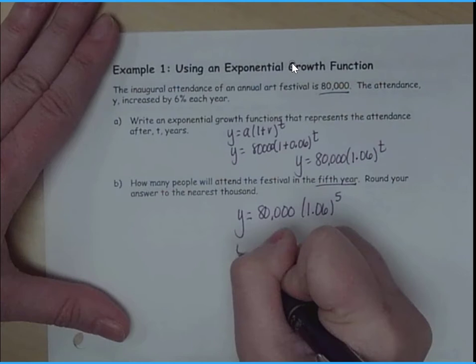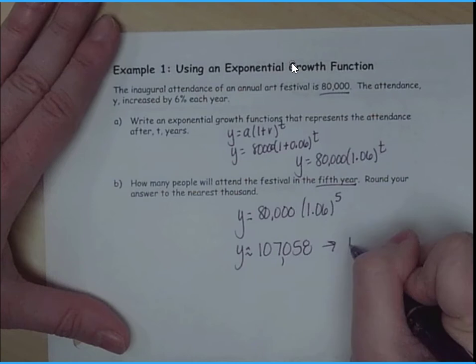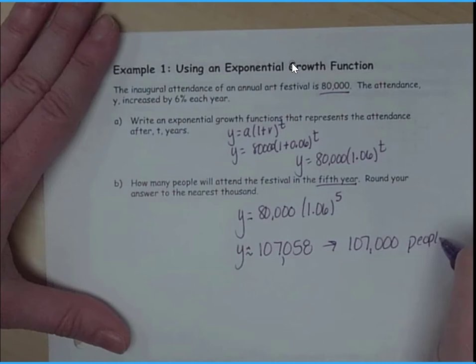Now it's not a super nice number. It's actually not too bad, 107,000. But I want to round to the nearest thousand. So we're just going to end up with 107,000 people. Now this is expecting a growth over time.